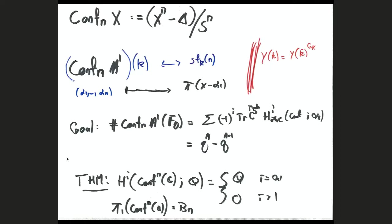One detail left off: why are the H^i's for i ≥ 2 trivial? You have an unramified cover X^n minus delta, so you can work with X. In this case X will be A^1 over C. It's like checking that π_2 of an elliptic curve is trivial — you pass to a universal covering space and calculate there. Then there's Hurewicz's theorem, which says the H^i's and π_i's match up through the first nonzero one.